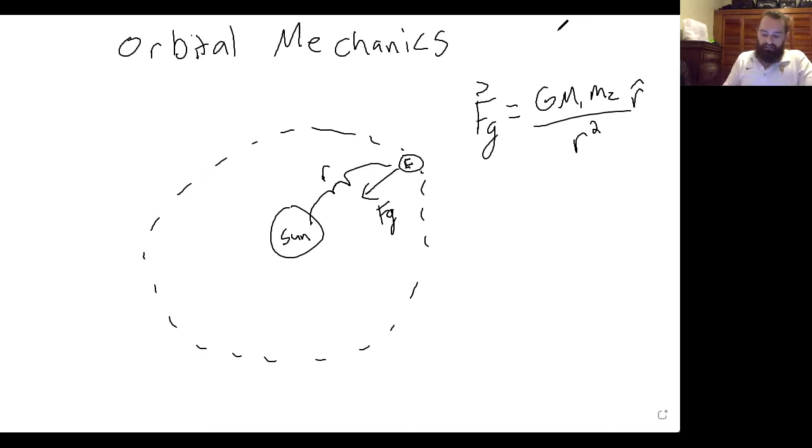So this doesn't necessarily explain why this is going in a circle because if you just had this force, the earth would just fall into the sun and we would all have a bad day. So there has to be some velocity that's perpendicular to this force.